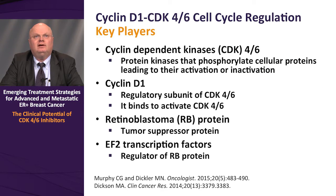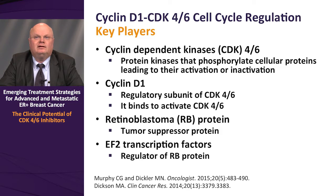The key players in the cyclin-D1 CDK4-6 cell cycle control pathway are the cyclin-dependent kinases themselves, CDK4 and 6. These are protein kinases that phosphorylate cellular proteins, leading to their activation or inactivation, and act at the G1 to S phase checkpoint. Cyclin-D1 is the regulatory subunit of CDK4 and 6, and its binding to CDK4-6 causes their activation. The RB retinoblastoma protein is a tumor suppressor that forms a complex with E2F transcription factors, which are the executioners of RB-mediated cell cycle checkpoint control.